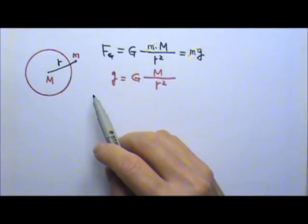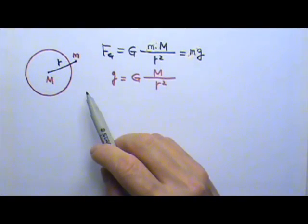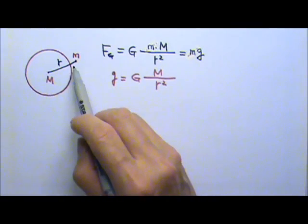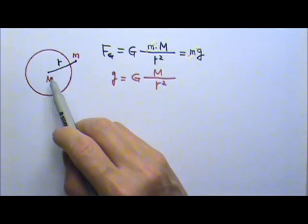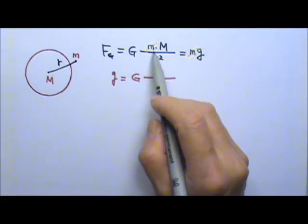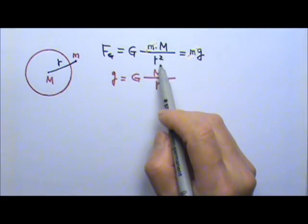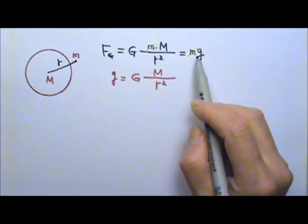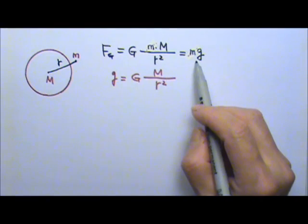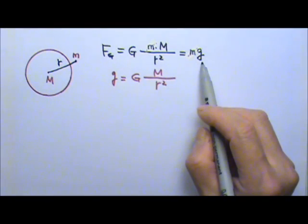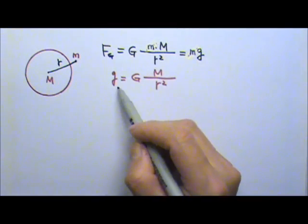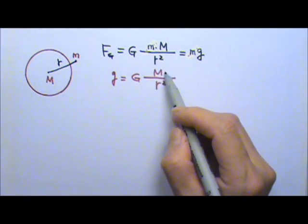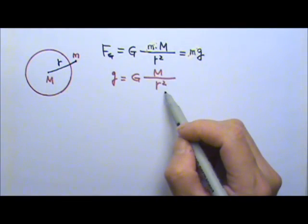In the last video lesson, we learned that the gravitational force between an apple of mass little m and the Earth of mass big M equals G·Mm/r². This gravitational force is also the weight mg, so with little m canceled, we get the gravitational acceleration little g equals big G times M over r squared.